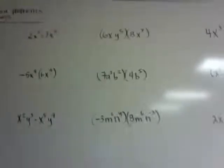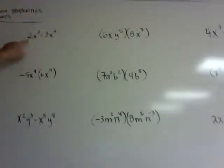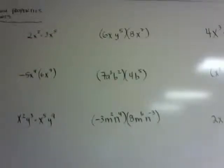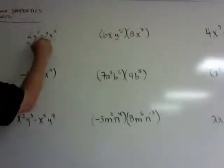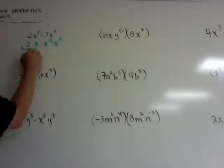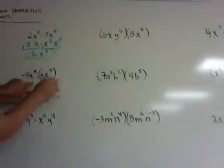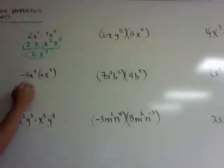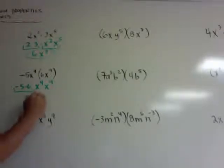If you have numbers in front with the same base and exponents, you can reorder them because they're all multiplying. For 2x² times 3x⁵: move the 2 and 3 next to each other and the x squared and x to the fifth together. 2 times 3 becomes 6 and x² times x⁵ becomes x to the 7th. Similarly, negative 5x⁴ times 6x⁹ becomes negative 30x to the 13th.